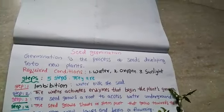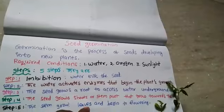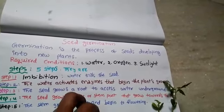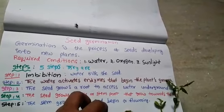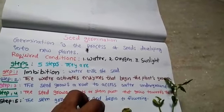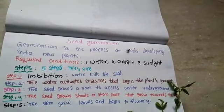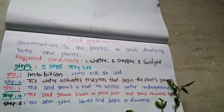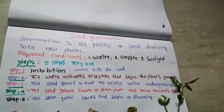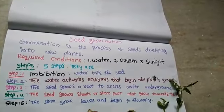Third, the seed grows a root — a root to access water from underground. This is the root. Underground means soil. This is the third step.